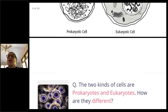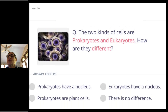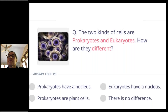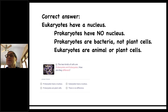Here's a quiz question for review: the two kinds of cells are prokaryotes and eukaryotes — how are they different? The answer is eukaryotes have a nucleus. Prokaryotes have no nucleus; those squiggles are just loose in the cell, not contained. And prokaryotes are bacteria, not plant cells — eukaryotes are animal or plant cells.